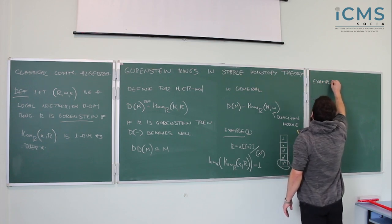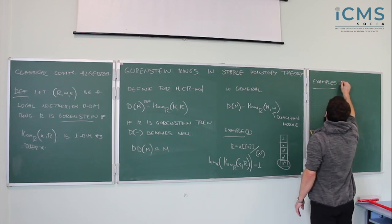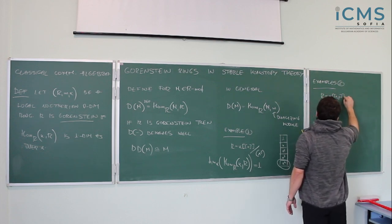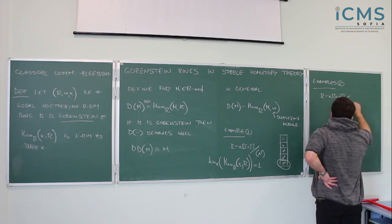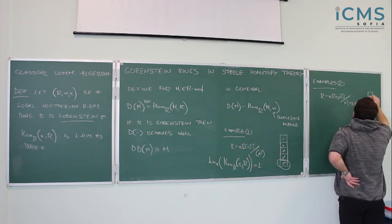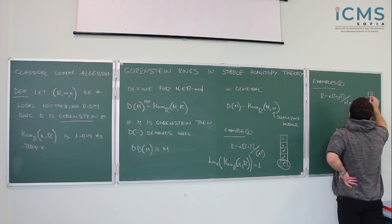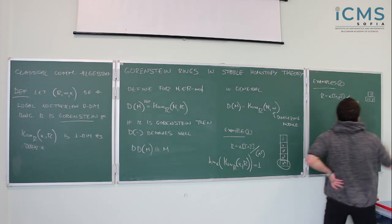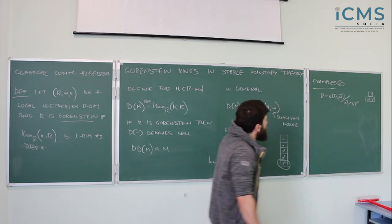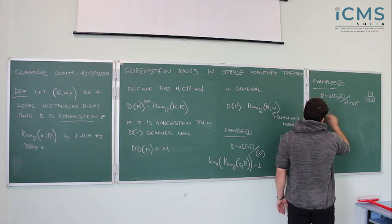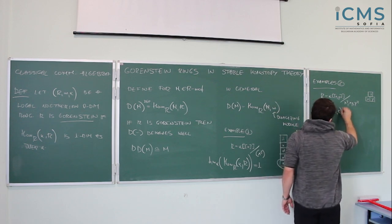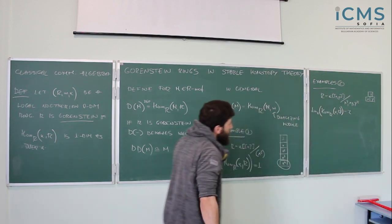To show you something that's not Gorenstein, I can take a formal power series ring this time in two variables, and kill x squared, xy, and y squared. If I draw the same monomial basis picture, I have one at the top, and x and y at the bottom — that's it. These two blocks at the bottom correspond to the fact that the socle is two-dimensional. So in this case the dimension is two, and R is not Gorenstein.